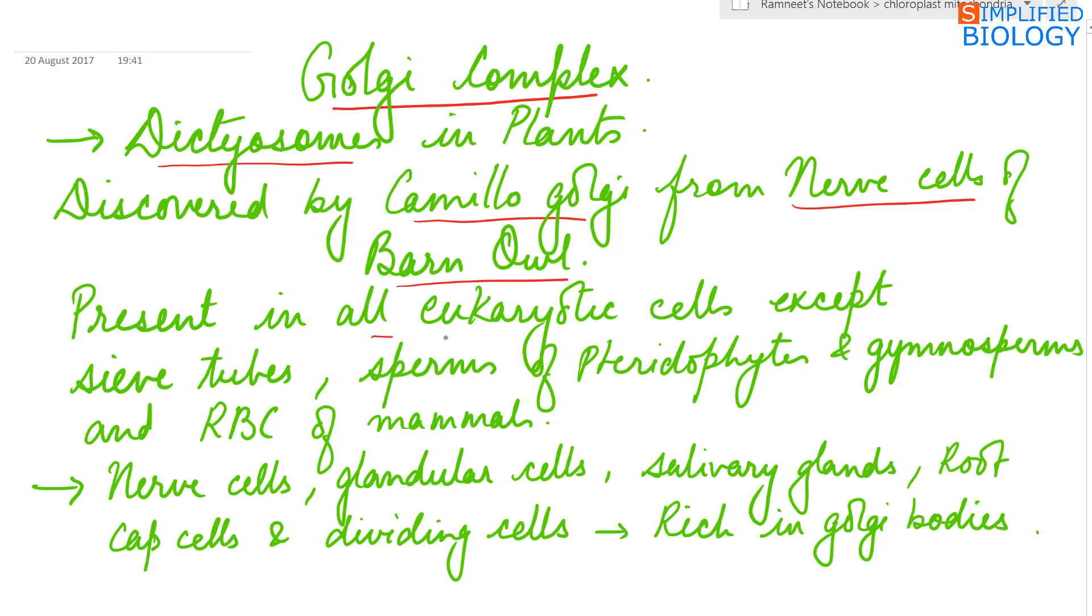They are present in all eukaryotic cells except sieve tubes of plants, sperms of pteridophytes and gymnosperms and RBC of mammals.